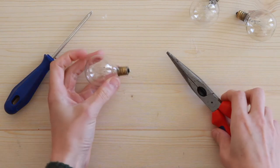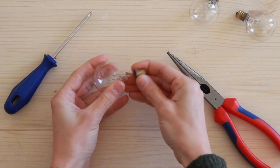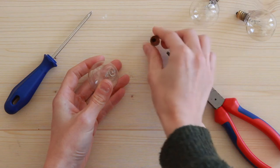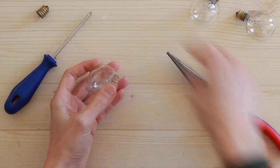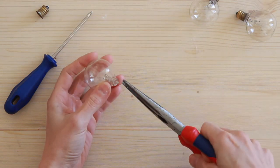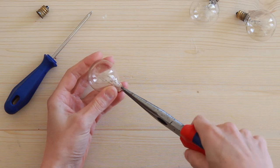First you need to take off that metal cap of your light bulb. If it doesn't come off as easily as shown here, you can just tap it a few times with your screwdriver and it should easily come off.